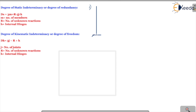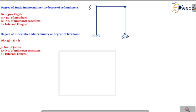This is the first frame — one end is fixed and the other end is hinged. There are two internal hinges. The fixed support has a vertical reaction, a horizontal reaction, and a moment reaction, so there are 3 reactions there. The hinge support has one vertical and one horizontal reaction, giving 2 unknowns.